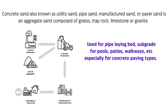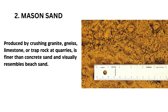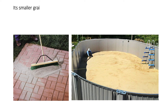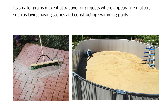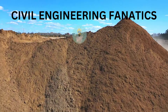3. Mason Sand. Mason sand is produced by crushing granite, gneiss, limestone, or trap rock at quarries. It is finer than concrete sand and visually resembles beach sand. Its smaller grains make it attractive for projects where appearance matters, such as laying paving stones and constructing swimming pools. Mason sand's versatility extends to mixing with concrete for brick, block, and stone laying, as well as applications in drainage systems, golf course bunkers, and airport runways.